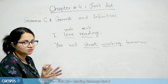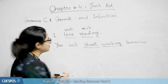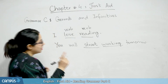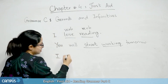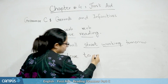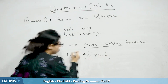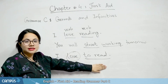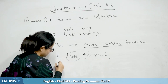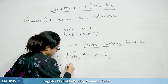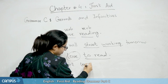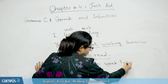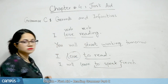The name is a little complex but the topic is very easy. The next thing is infinitive. Infinitive means the verb is used with 'to.' For example, 'to read' is an infinitive. Another example: 'I will learn to speak French' — here 'to speak' is the infinitive.